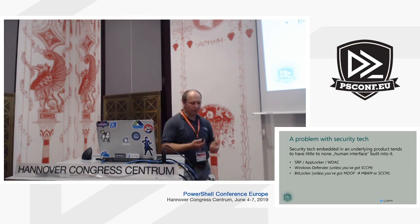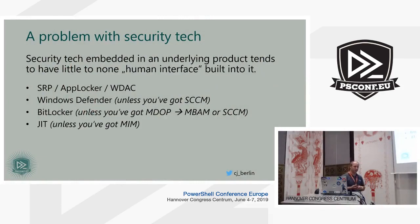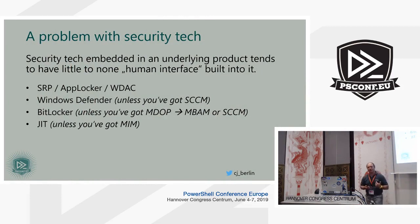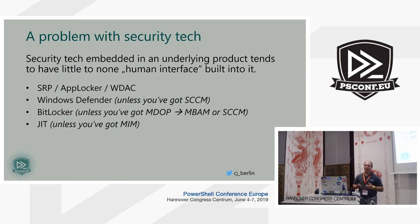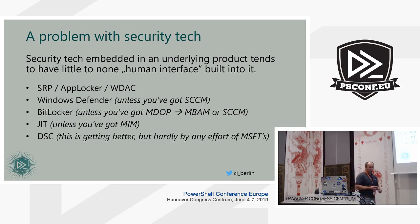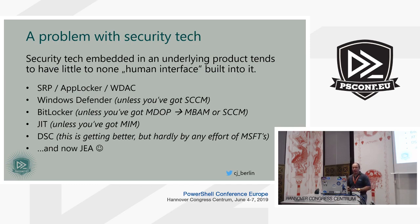BitLocker — same story. JIT: you have all the bits and pieces at hand if you are on Active Directory function level 2016 or better to have JIT, but next to nothing to manage it besides PowerShell commandlets and LDAP directory services classes. Or you go get MIM, which has a very steep price tag. DSC is great technology, but the community has had to step in to make it operational. And now JIA — exactly the same story.